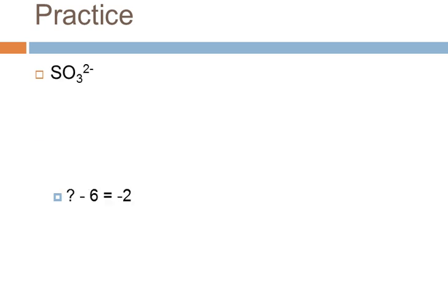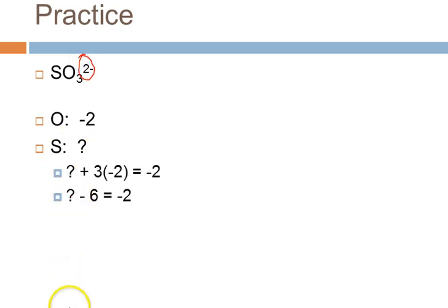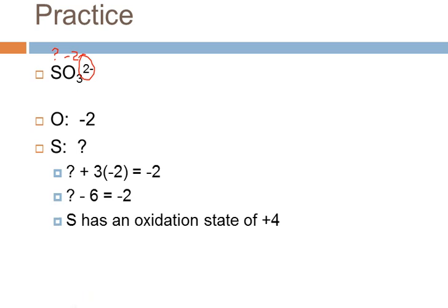Let's look at a polyatomic ion example. Each oxygen has an oxidation number of minus two — that's typical and this isn't one of the exceptions. There's no direct rule for sulfur, since it can have a range of oxidation numbers. We know the sum of the oxidation numbers must equal minus two, the overall charge of the ion. There are three oxygens, so doing the math, the sulfur in this ion has an oxidation number of plus four.